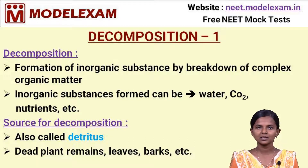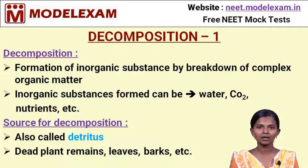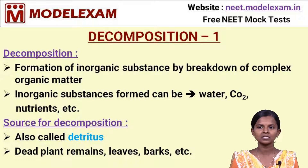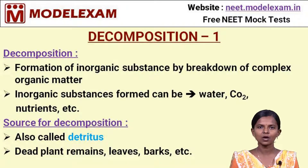This is the second component of an ecosystem. Decomposition is the formation of inorganic minerals from organic matter, which comes from dead organisms. These inorganic substances include materials such as water, carbon dioxide, and nutrients. These inorganic substances or minerals are used by plants for their growth, and these plants are then used by heterotrophs for consuming energy.